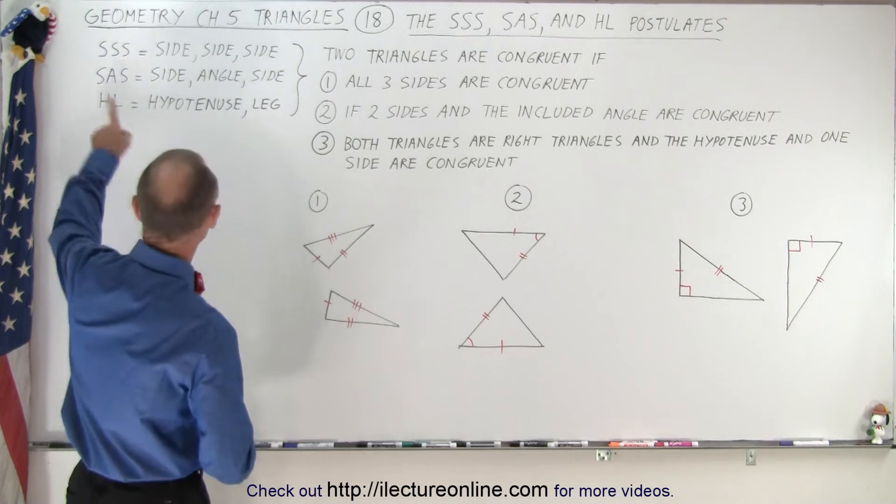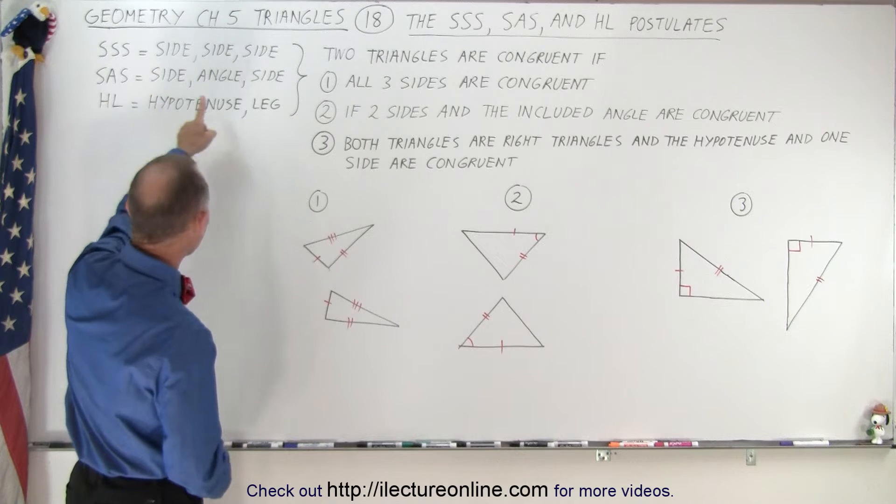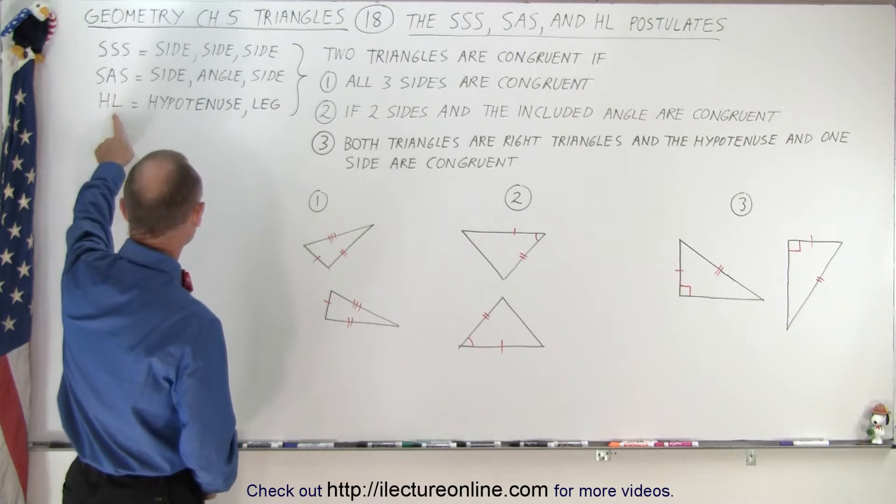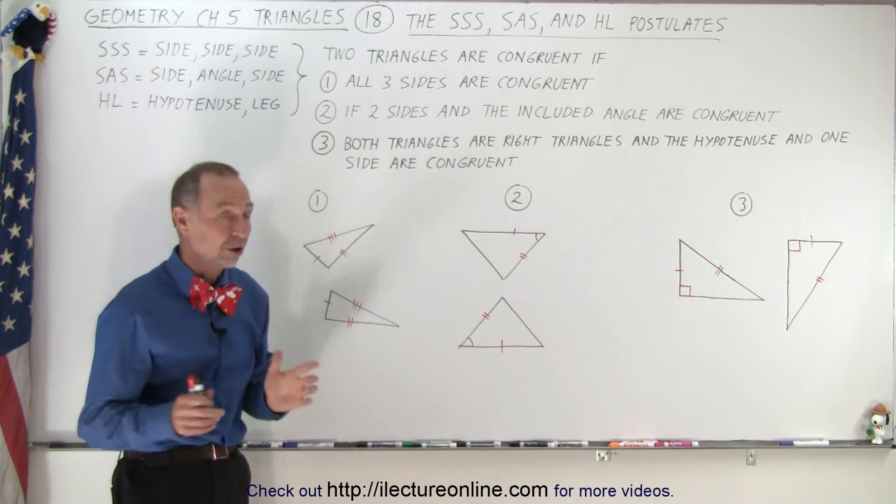Now what do they stand for? SSS stands for side, side, side. SAS stands for side, angle, side. And HL stands for hypotenuse and leg. Now the postulates are as follows.